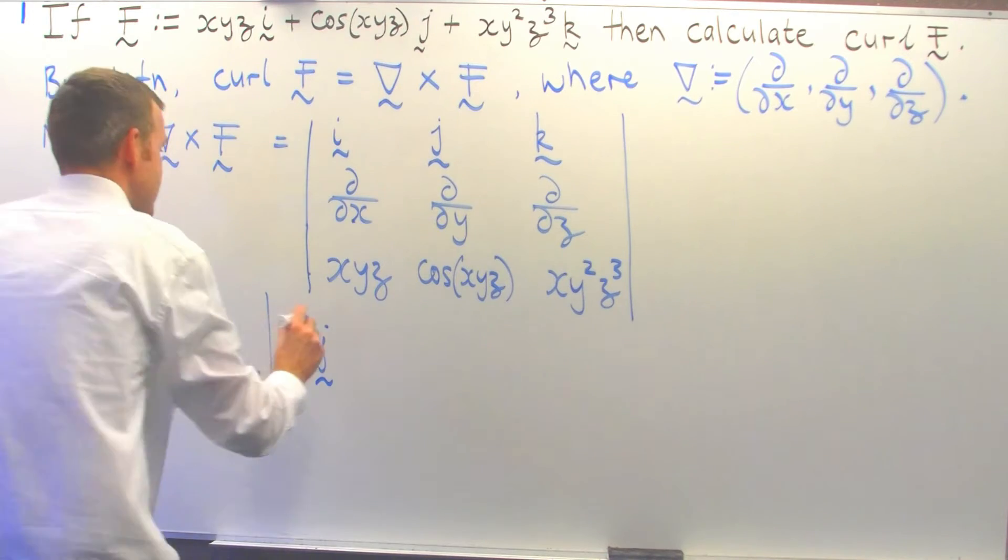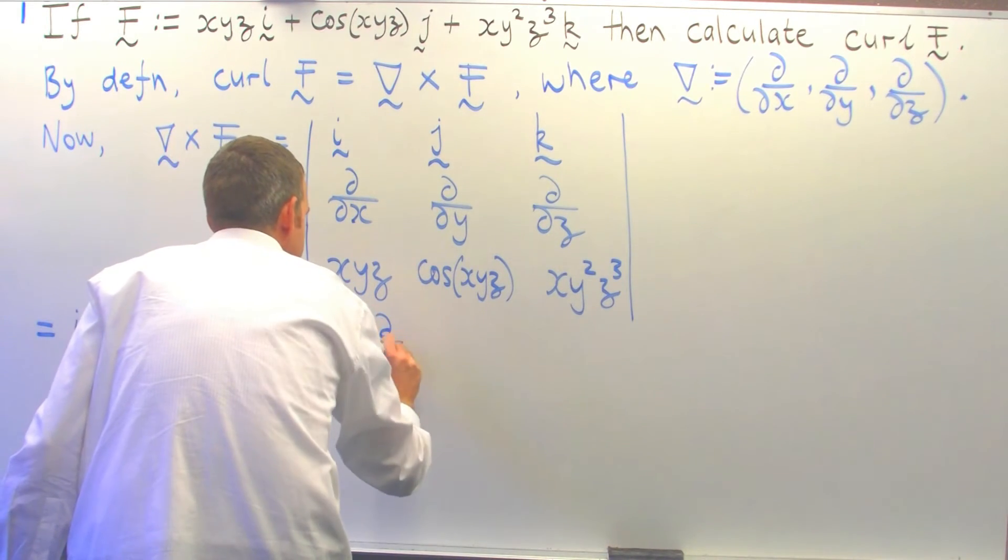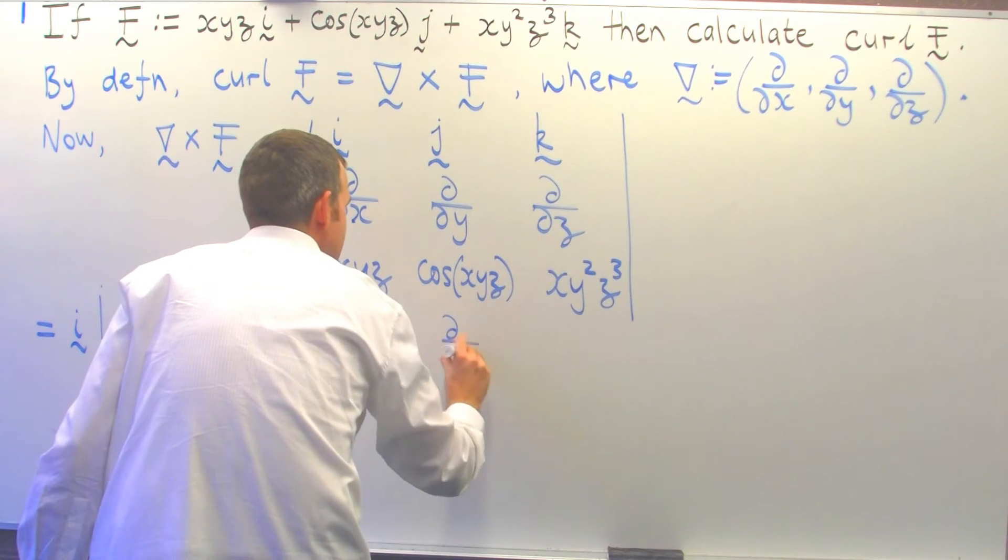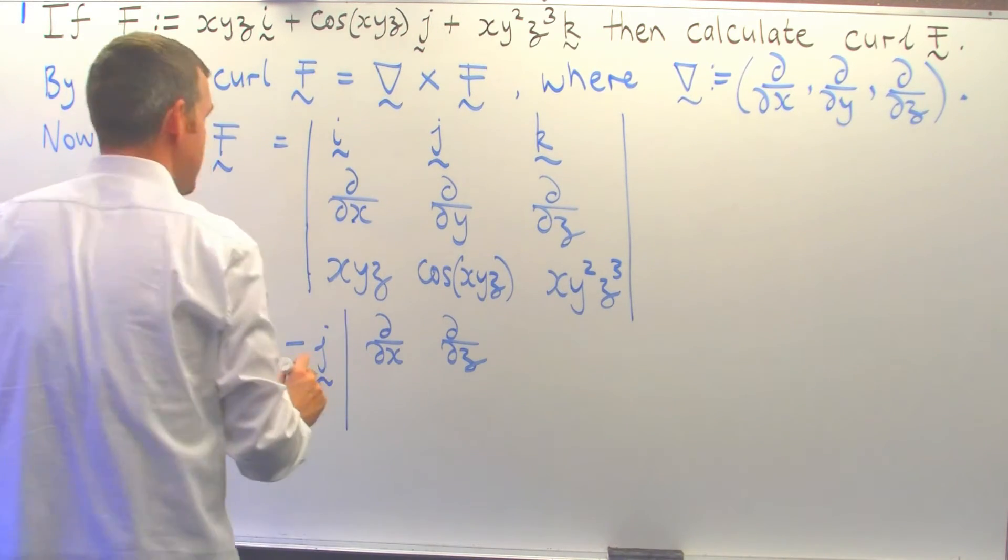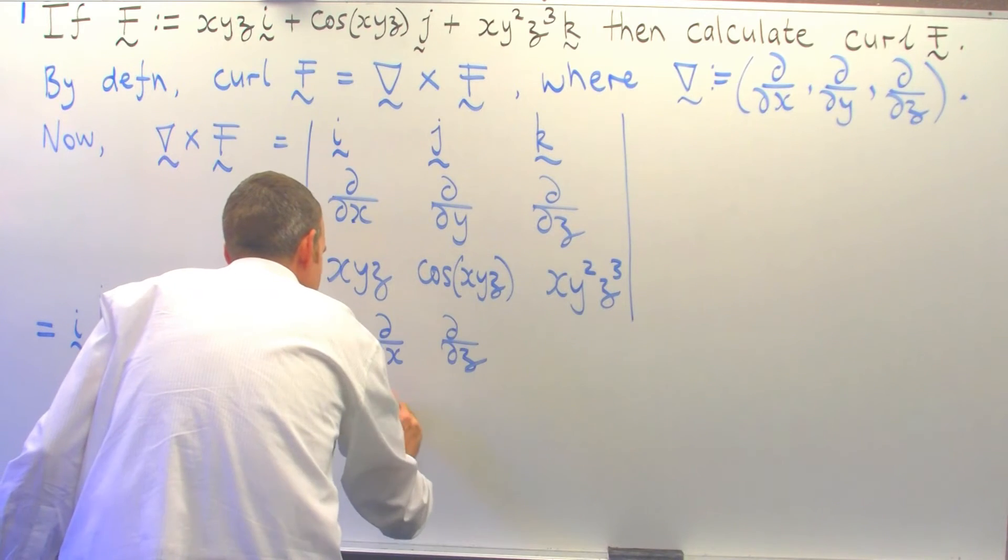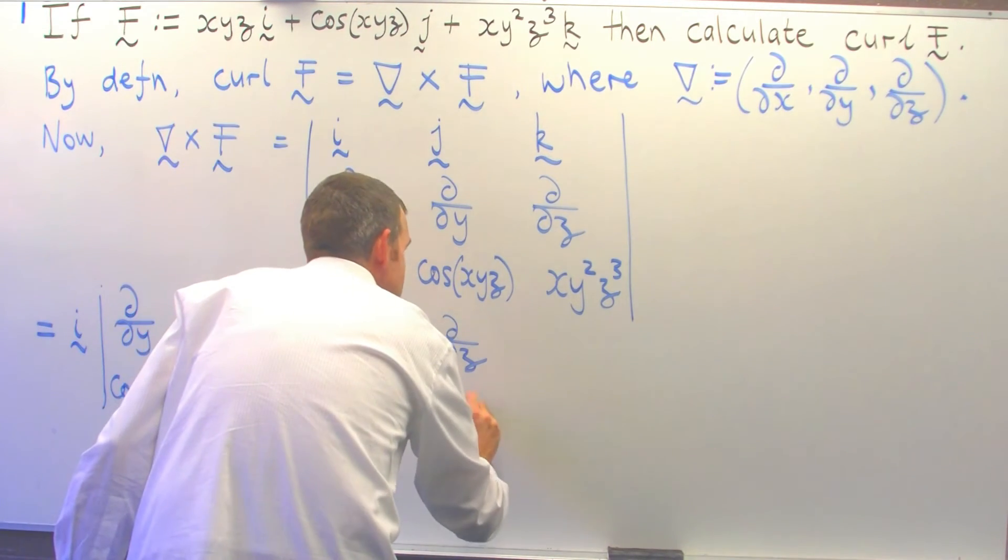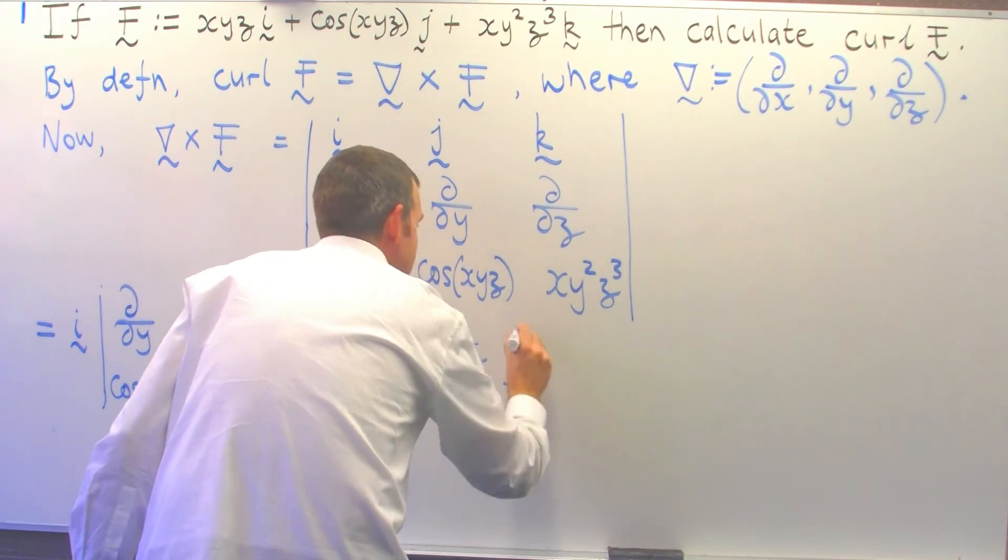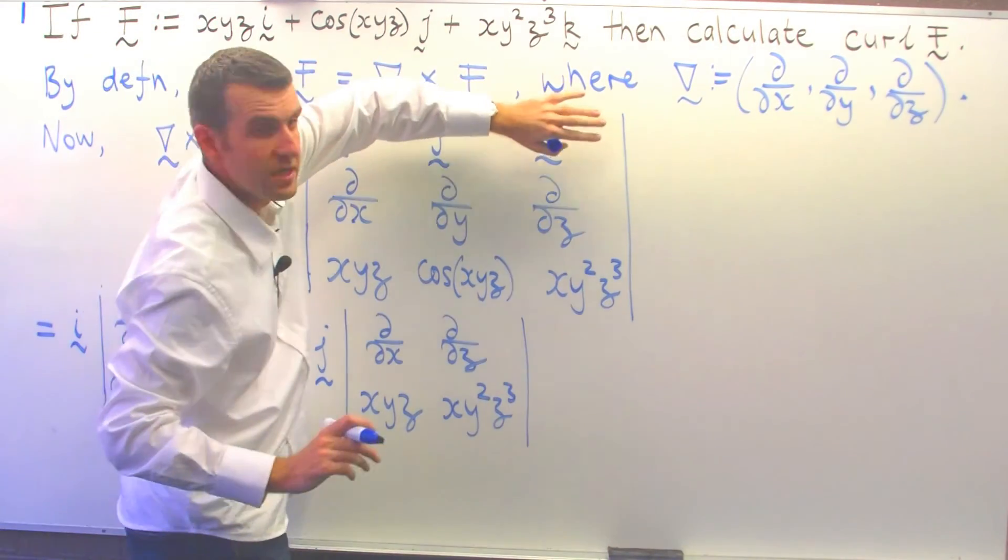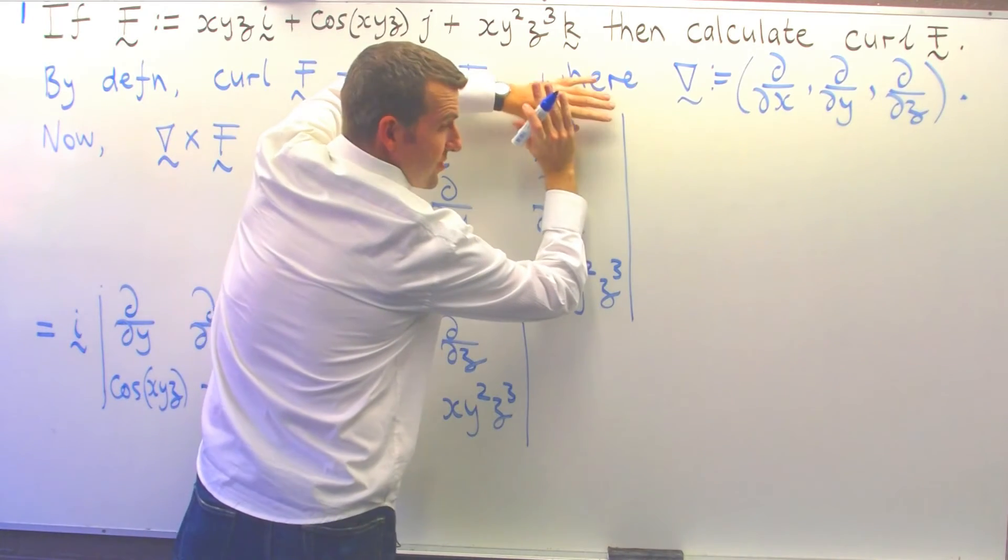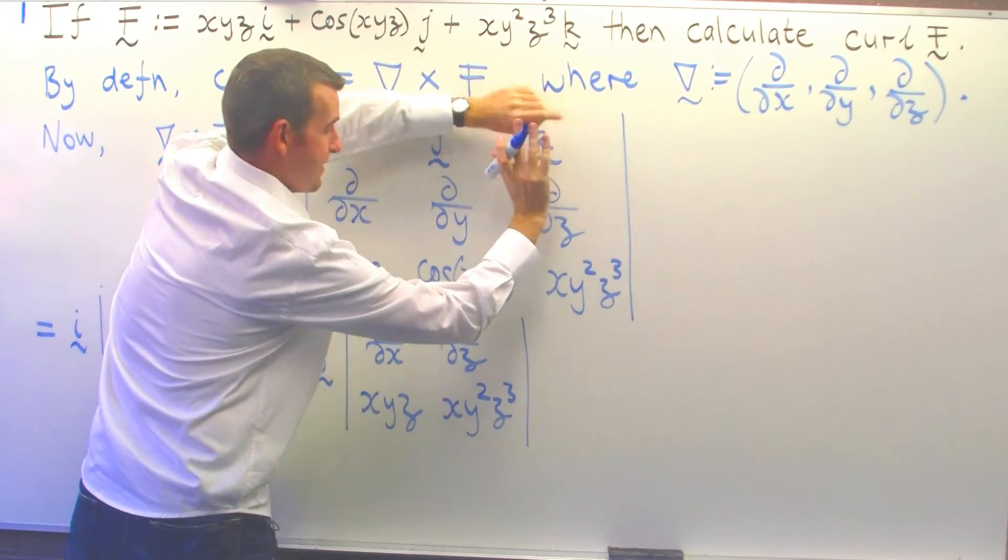So that's cos(xyz), xy²z³. And finally we move on to k. k is in the top row and the third column. I cover those up, so now we multiply by the determinant of what's left.